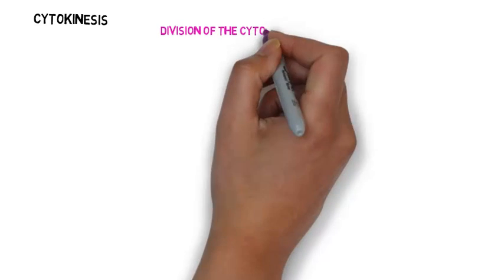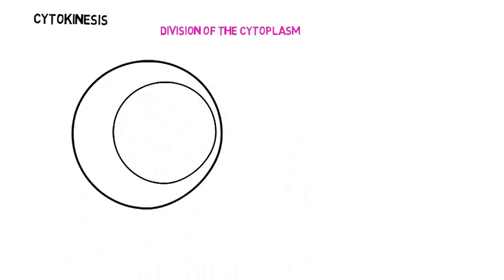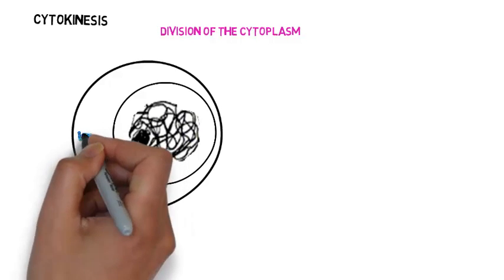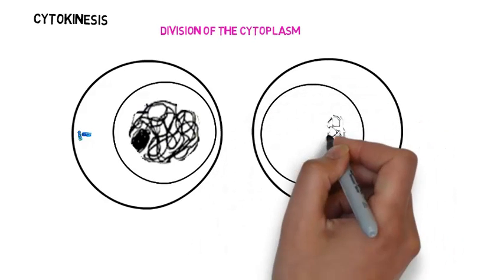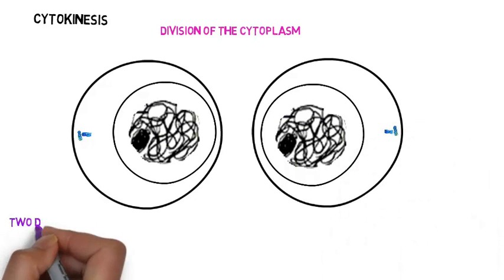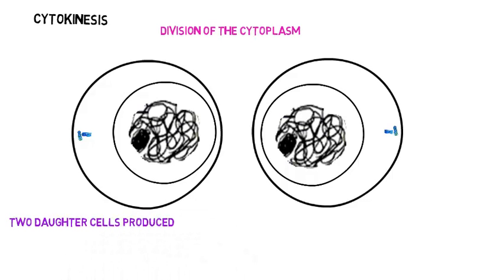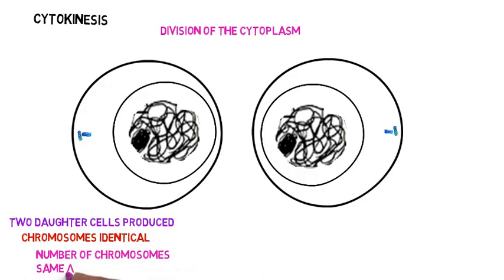The final part is what we call cytokinesis — the division of the cytoplasm. This occurs differently in plants and animals. Mitosis has replicated and separated the genetic material into two new nuclear membranes, and cytokinesis now divides the cytoplasm. The chromosomes have returned to their chromatin material — diffused out and spread out — and two daughter cells are produced. These daughter cells have identical chromosomes and the same number of chromosomes as the parent cell.